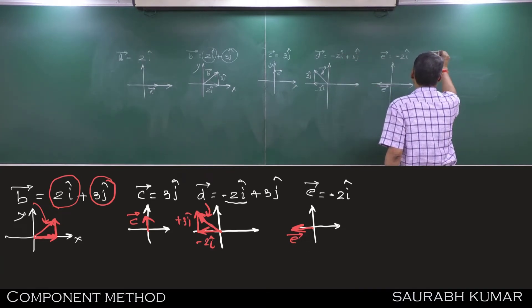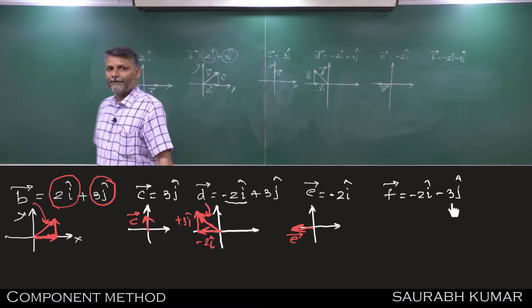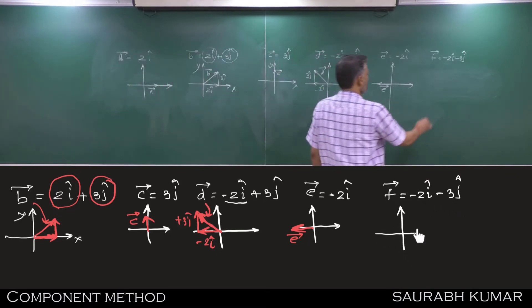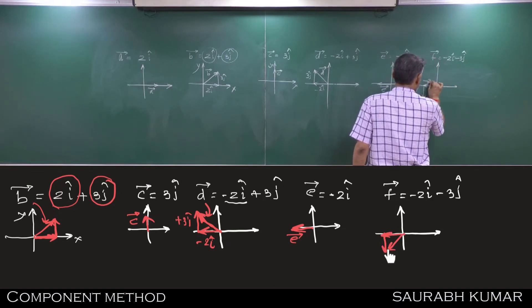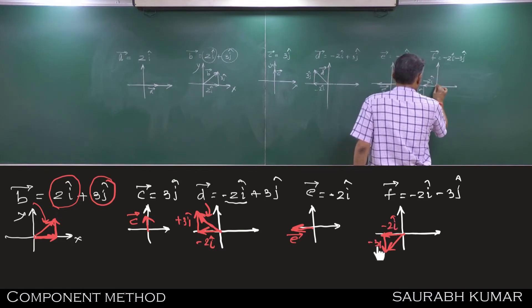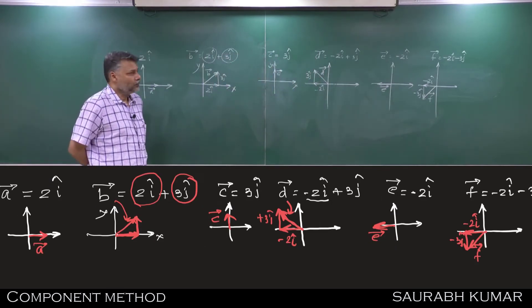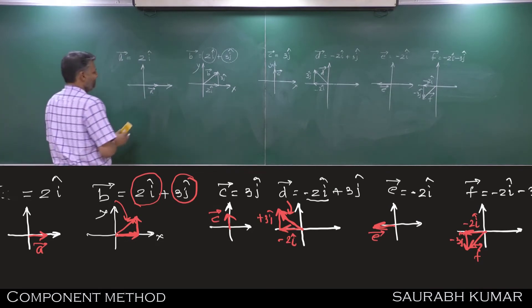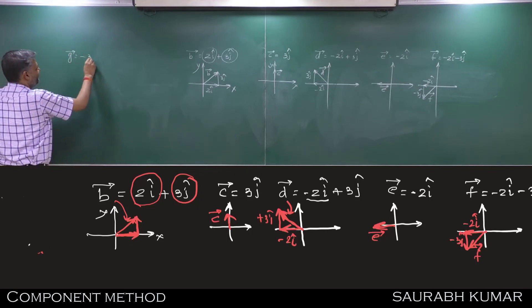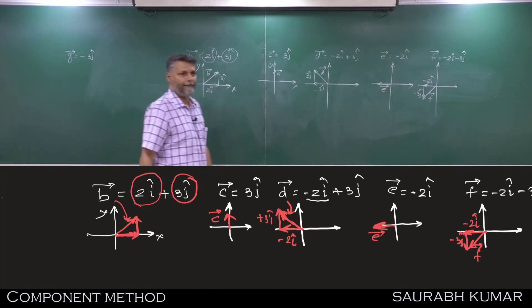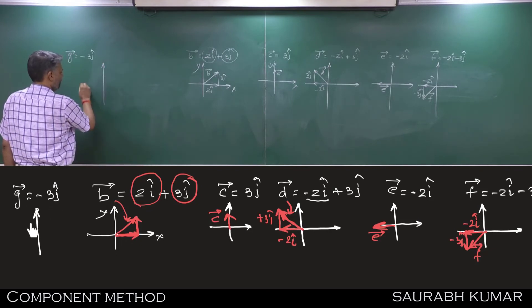Vector F minus 2i cap minus 3j cap. Could draw minus 2i cap minus 3j cap. This is vector F. Vector G minus 3j cap, negative.